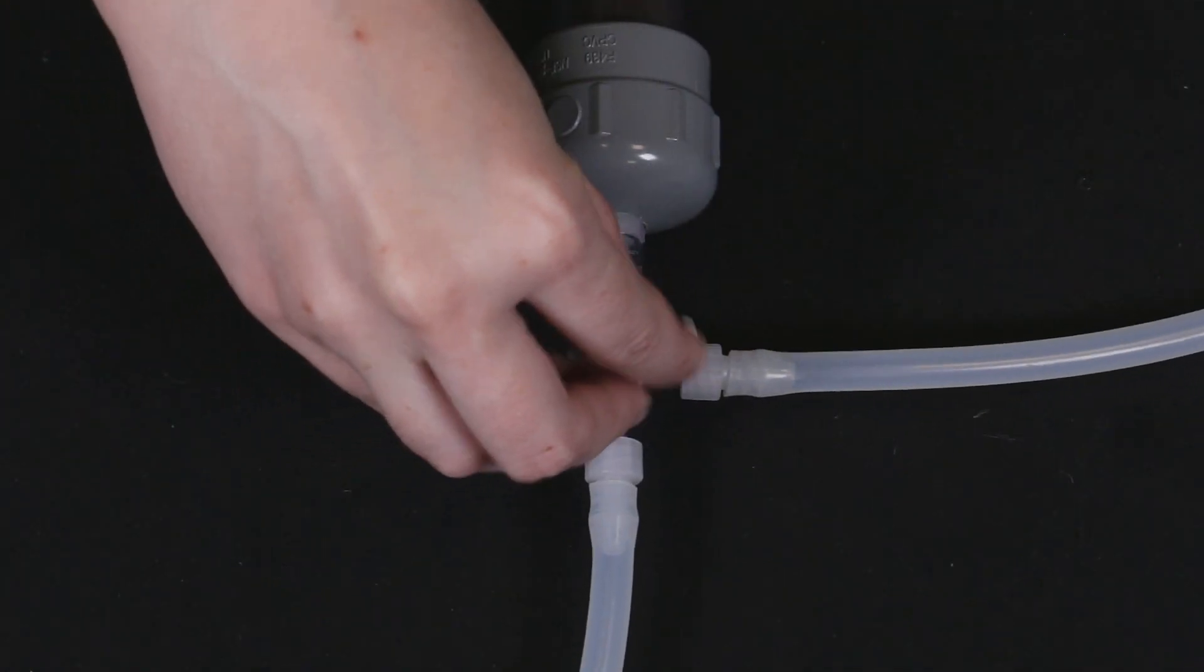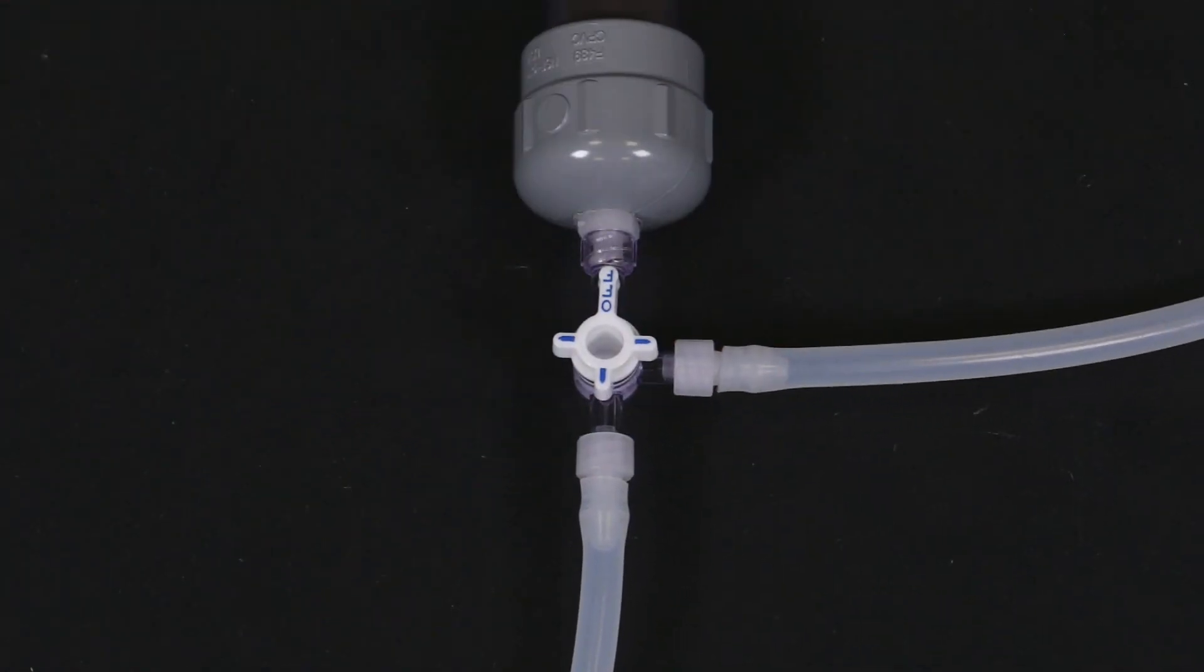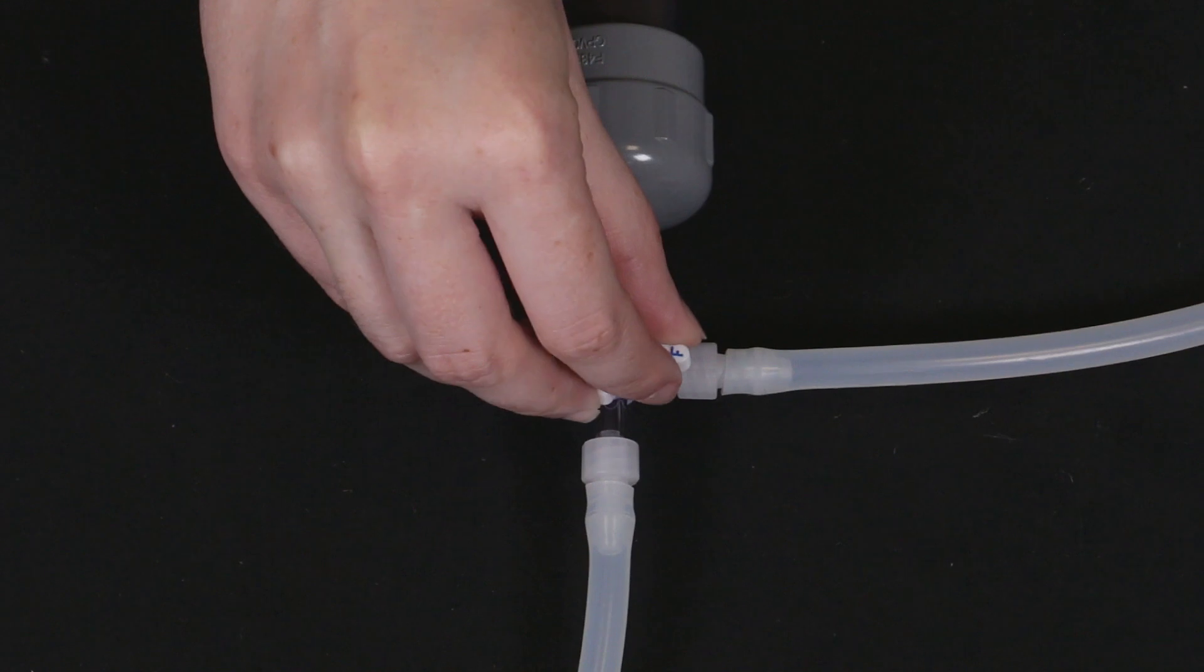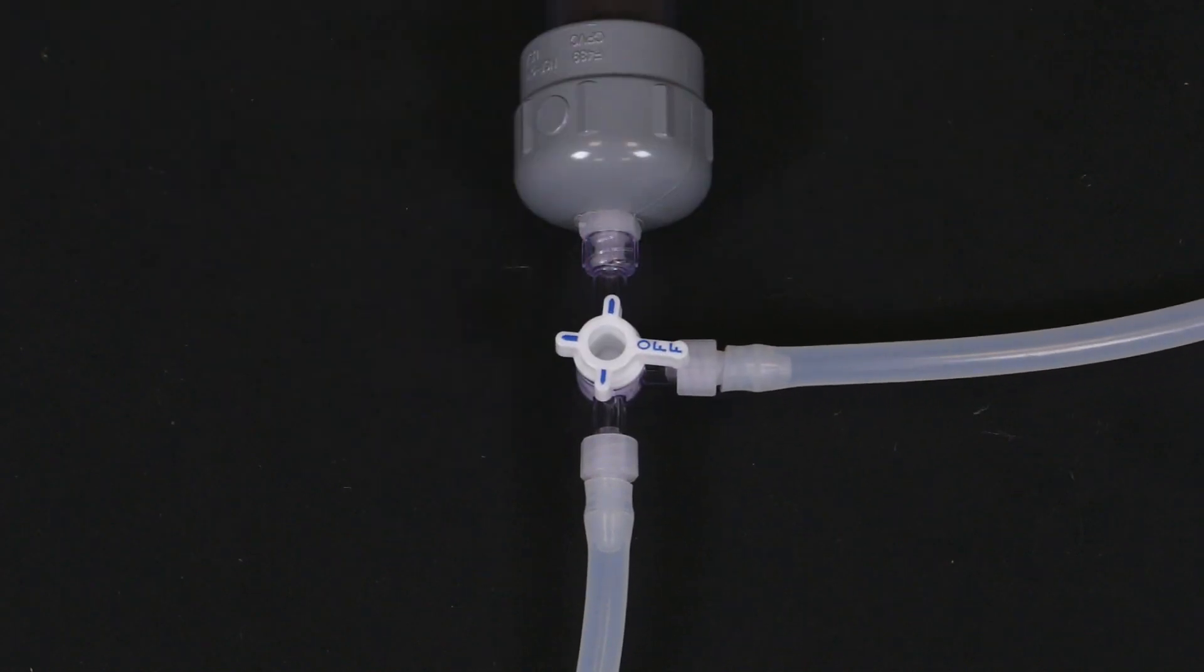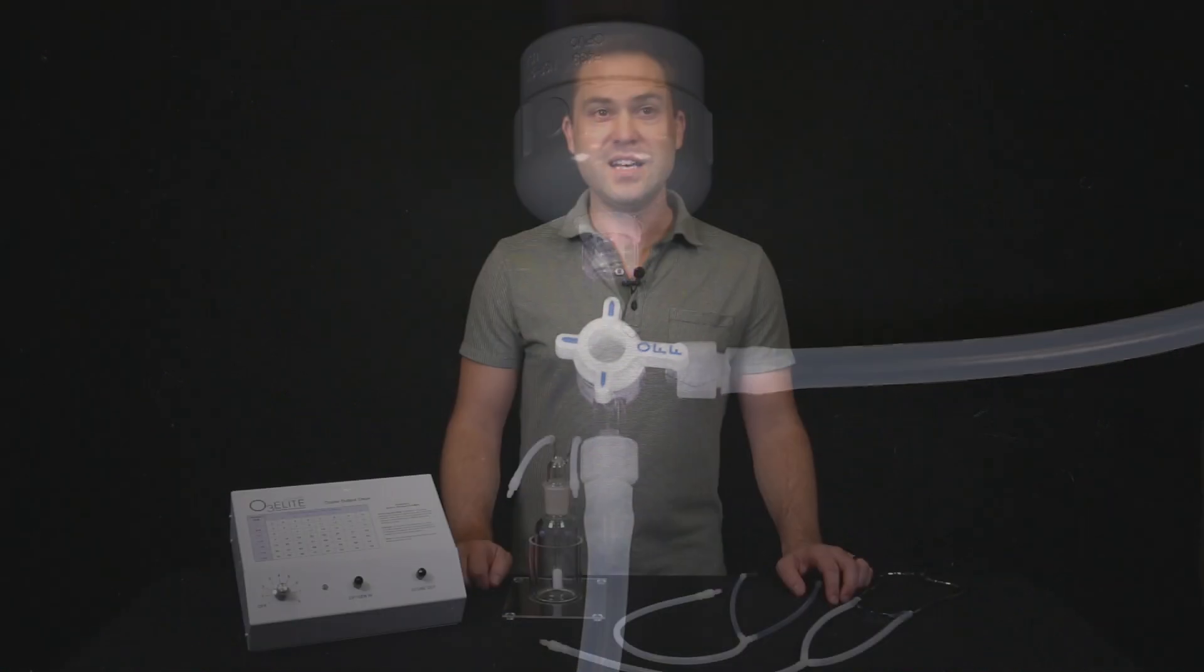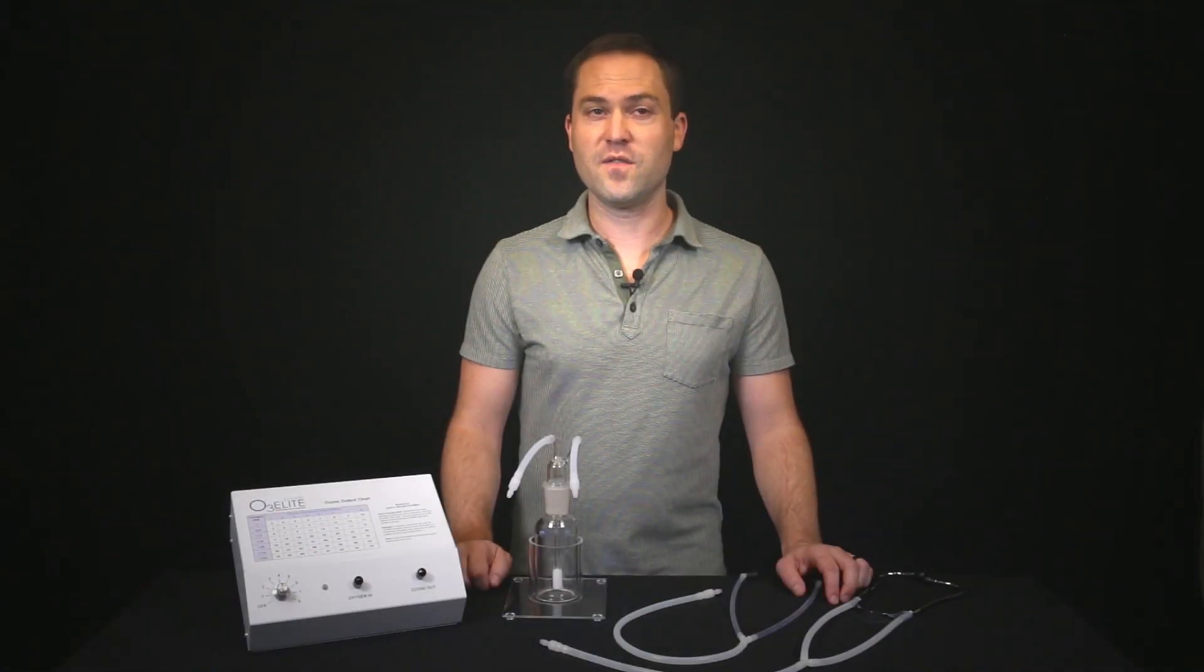To begin your ear insufflation, turn the off valve toward the destruct system and begin your insufflation. After your insufflation is complete, just turn the off back to the side. When you are finished with your ozone treatment, it is always important to turn off your ozone generator first. You will need to let the oxygen continue to run for 30 seconds and then turn off your oxygen source.